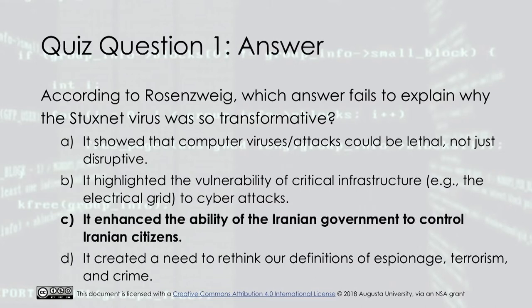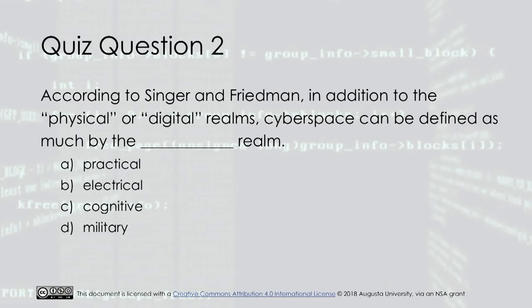The answer is C — it enhanced the ability of the Iranian government to control Iranian citizens. Quiz Question 2: According to Singer and Friedman, in addition to the physical or digital realms, cyberspace can be defined as much by which realm? A. Practical. B. Electrical. C. Cognitive. D. Military. The answer is C, the Cognitive Realm.